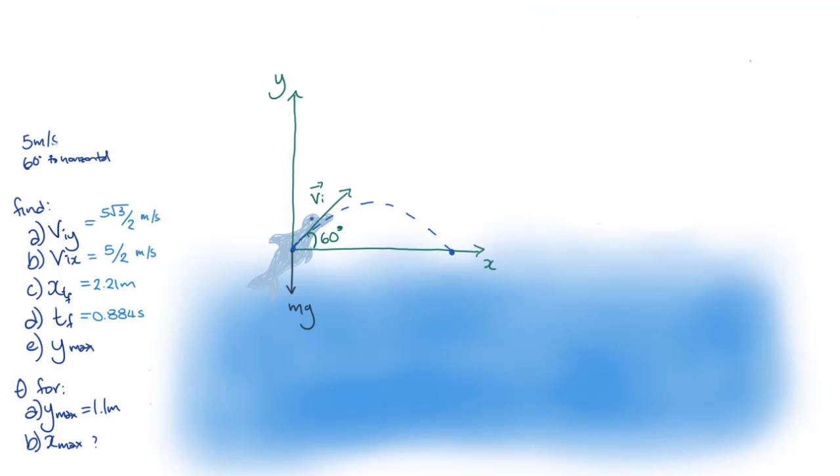Now we're going to look at the maximum height. The dolphin will reach its maximum height at tf divided by 2, halfway through the total time it spends in the air.